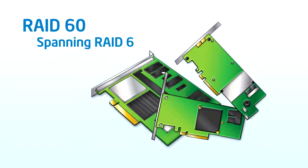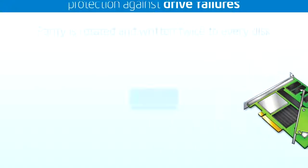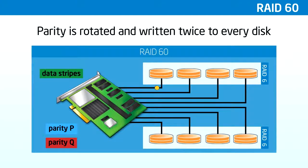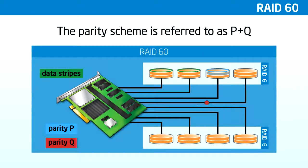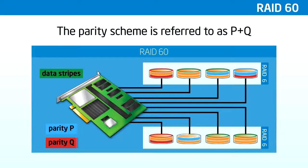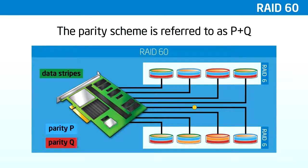RAID 60 combines data striping of RAID 0 with a distributed double parity of RAID 6. That is, a RAID 0 array striped across RAID 6 elements. It typically requires at least six to eight disks. RAID 60 has improved fault tolerance, as any two-disk sets of each of the RAID 6 sets can fail without data loss. Also, drive failures or unrecoverable media errors occurring while a single disk is rebuilding in one RAID 6 set will not lead to data loss. Striping helps to increase capacity and performance without adding disks to each RAID 6 set, which would decrease data availability and could impact performance. RAID 60 improves upon the performance of RAID 6. Despite the fact that RAID 60 is slightly lower than RAID 50 in terms of writes, due to the added overhead of more parity calculations when data security is concerned, this performance drop may be negligible.